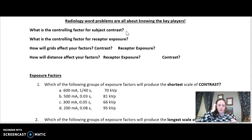So knowing how to do the word problem, you have to know the key players. What is your controlling factor for subject contrast? We know that is KVP. And your controlling factor for receptor exposure, that is going to be MAS.